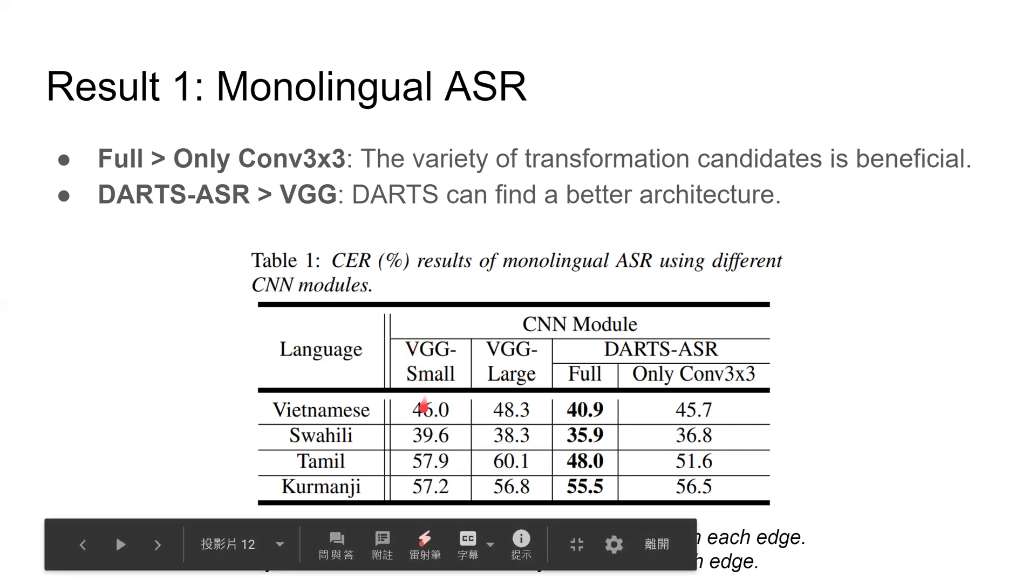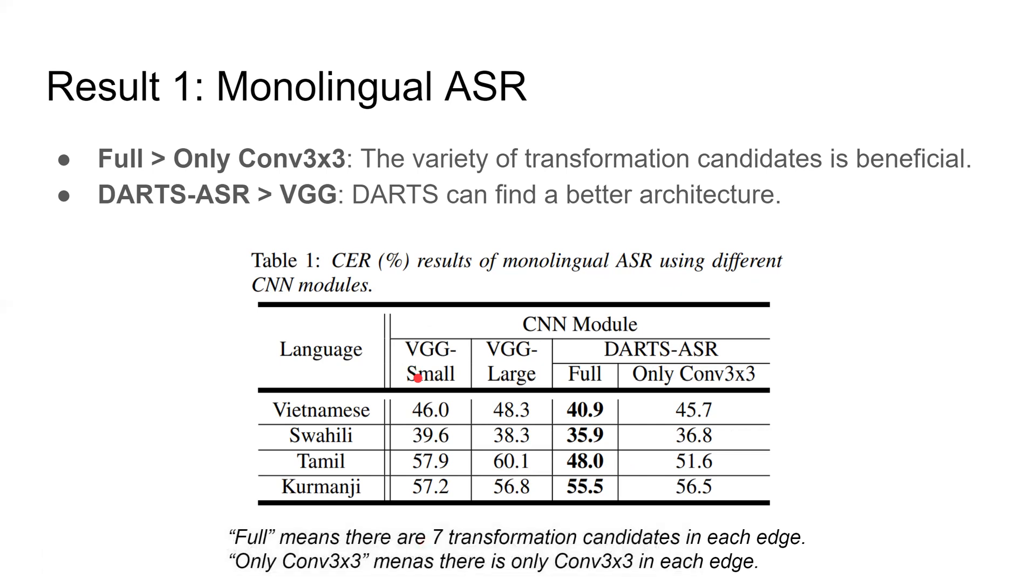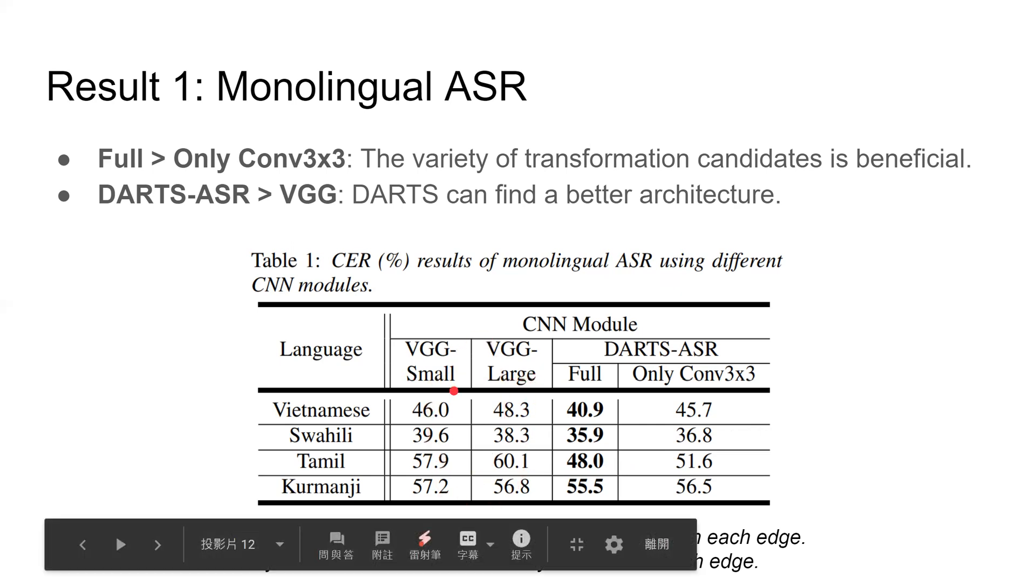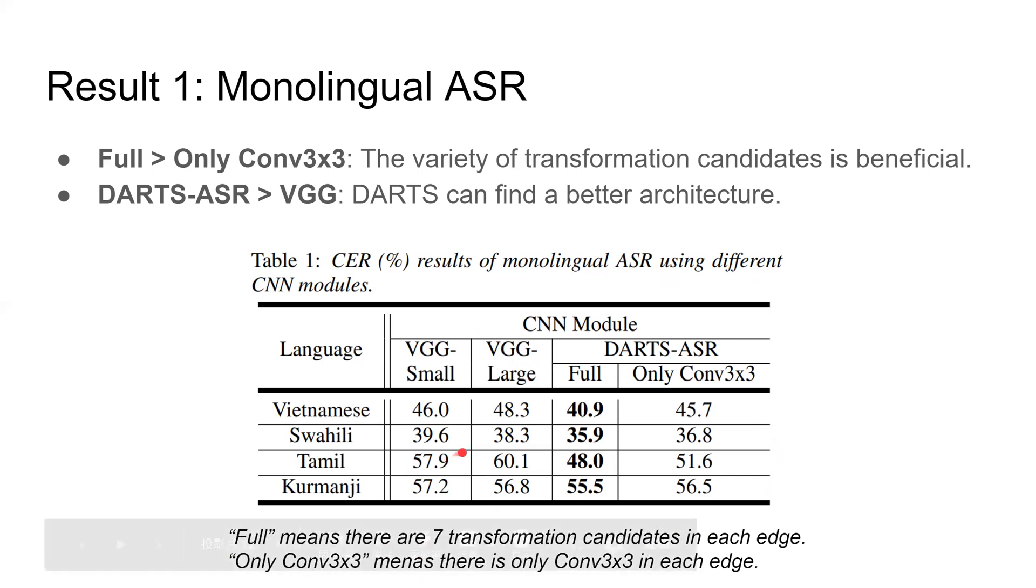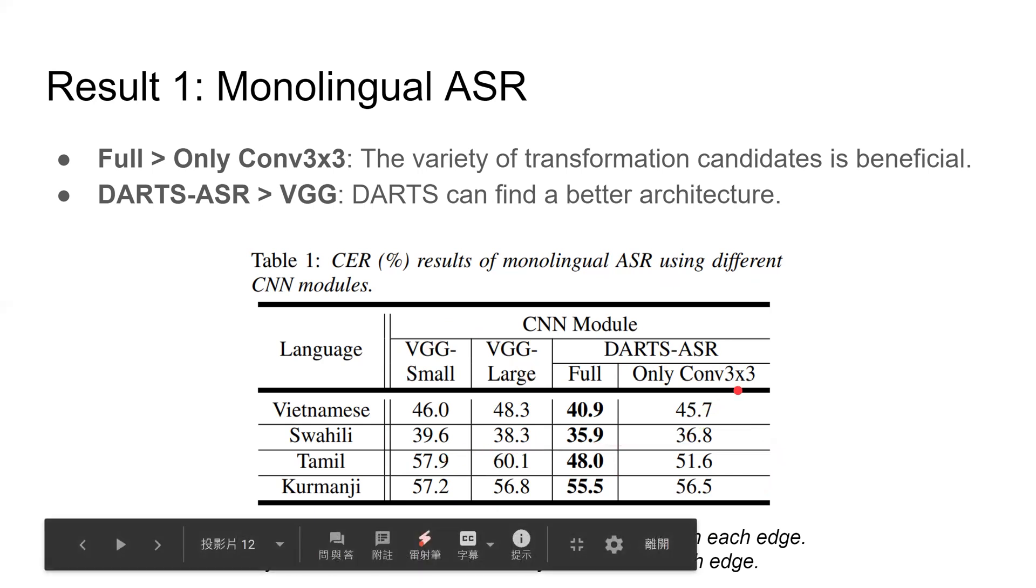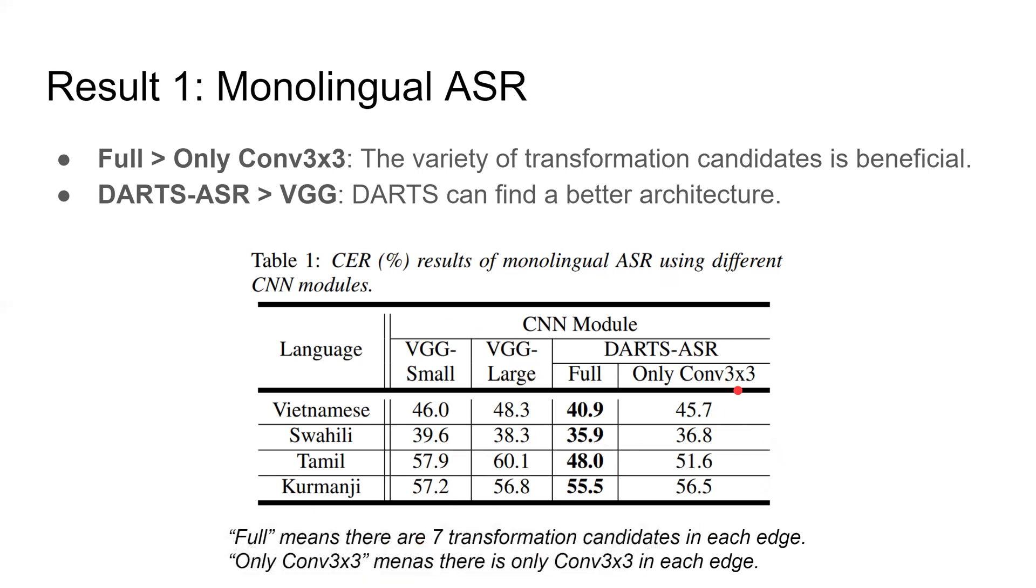And the left-most column in this table, VGG-small, is commonly used in literature. And VGG-large is the one with larger channel size, matching the parameter size of two DARTS-ASR variants. From this table, we can see both two DARTS-ASR variants outperform two VGG variants. It indicates given the same depth and parameter size, the automatically searched architectures can perform better than fixed architecture models.